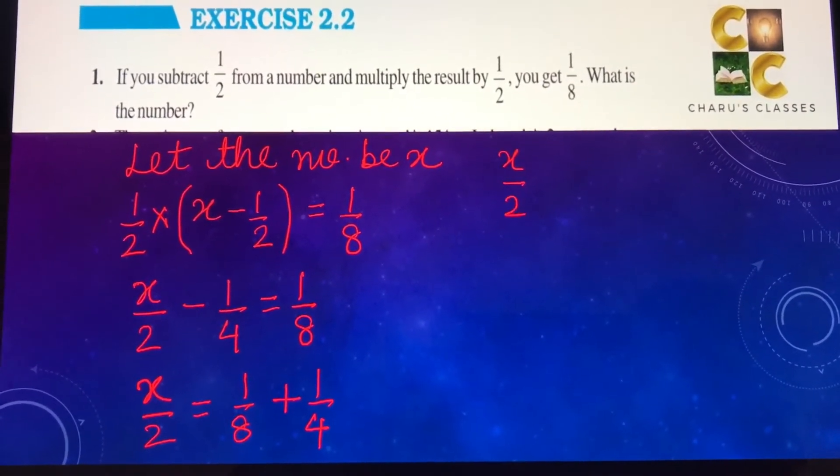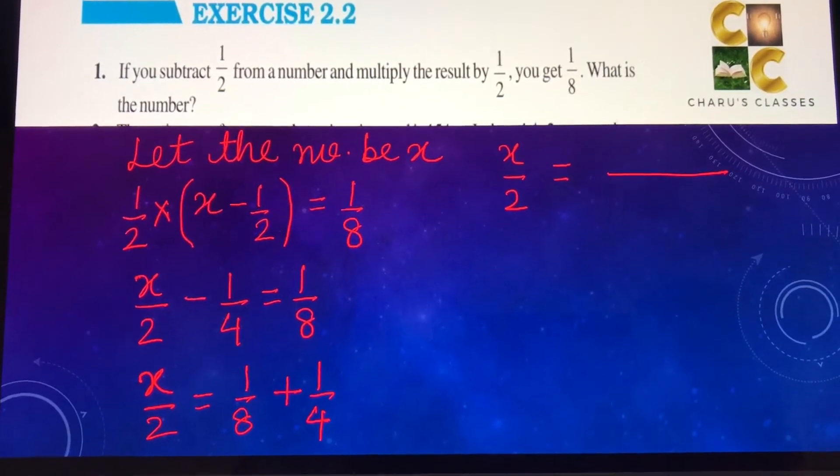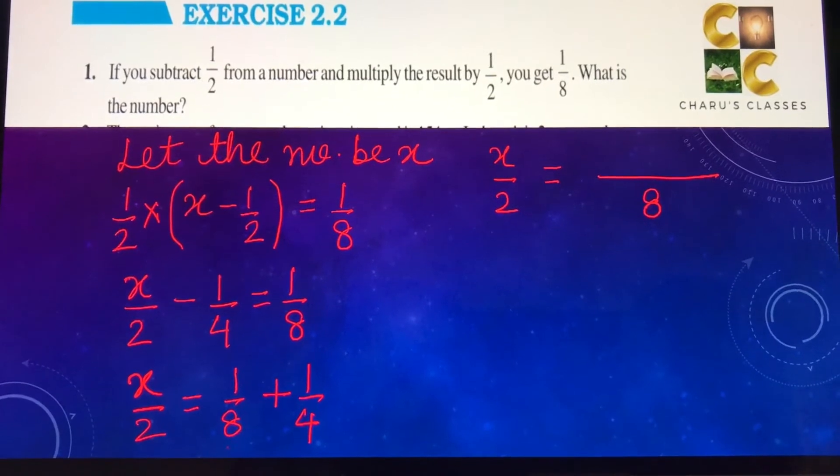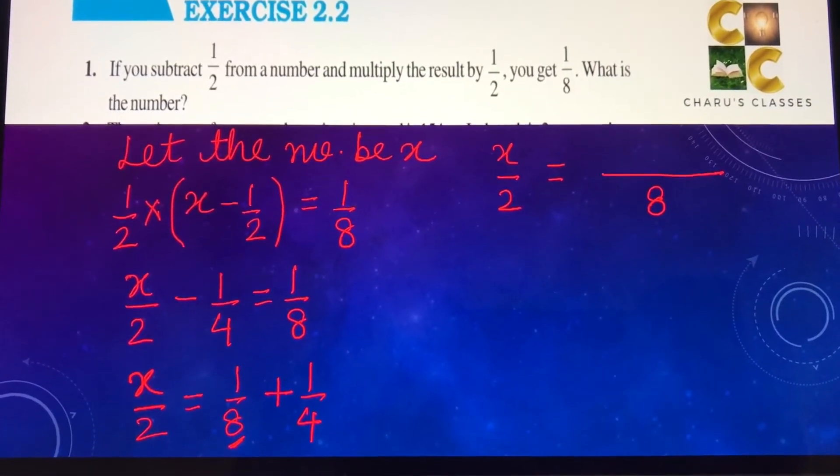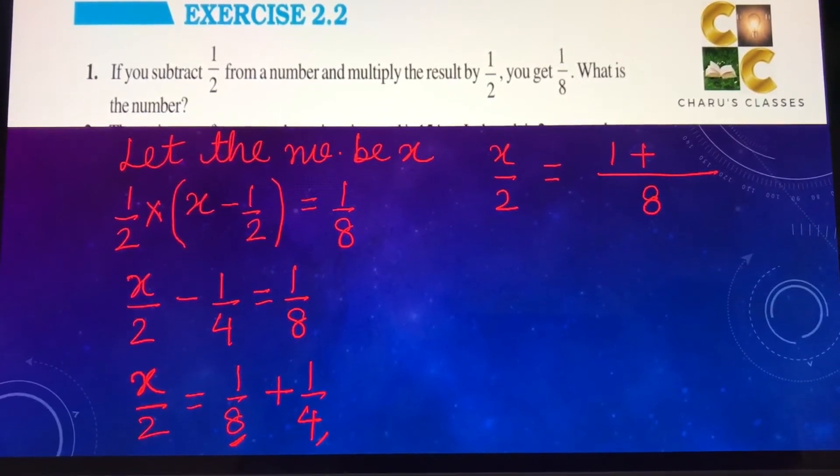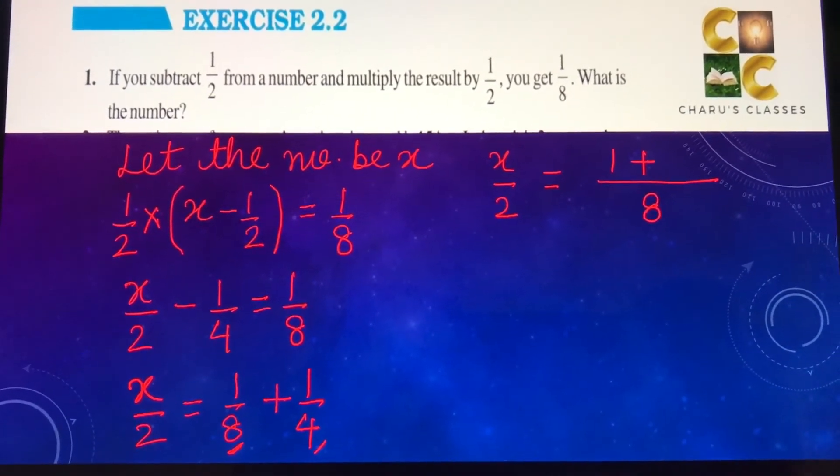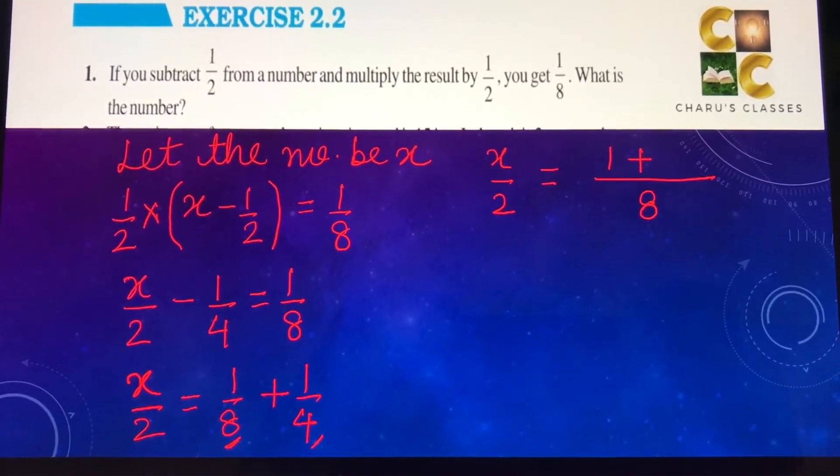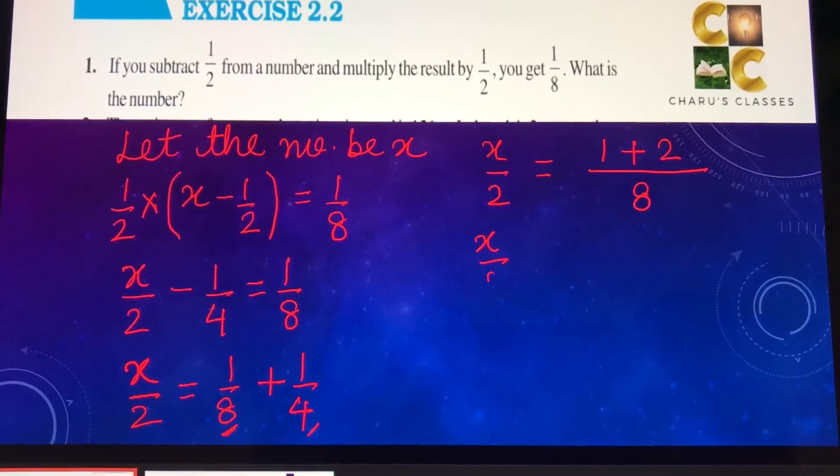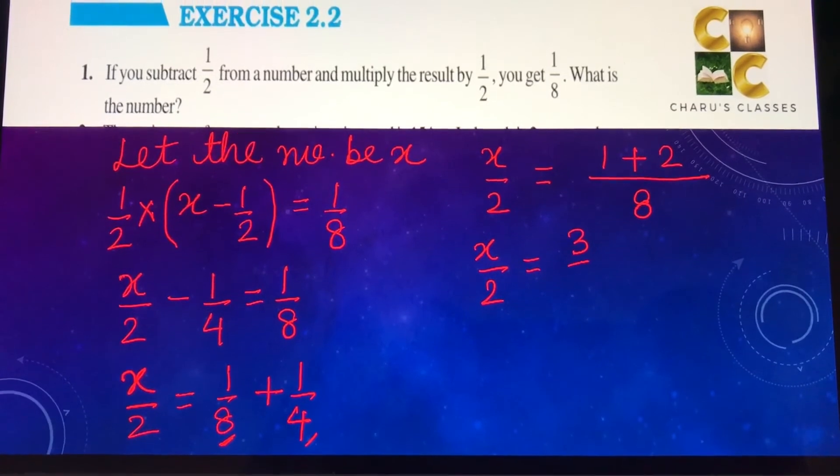So we can write x by 2 is equal to 8, which is the common LCM. Now there is already 8, so 1 will remain the same. And there is 4. So 4 into 2 is 8. The numerator will also be multiplied with 2, which makes it 2. So x by 2 is equal to 3 by 8.